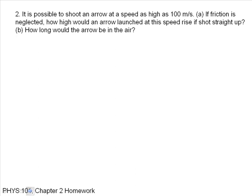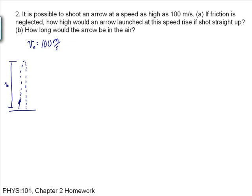It's possible to shoot an arrow at a speed as high as 100 meters per second. Let's write down everything we know: the initial speed can be as high as 100 meters per second. If I shoot the arrow up, it goes up and then comes back down. I want to know how high it goes — call that distance Y — and I also want to know the total time it's in the air. The acceleration due to gravity is minus 9.8 meters per second squared.